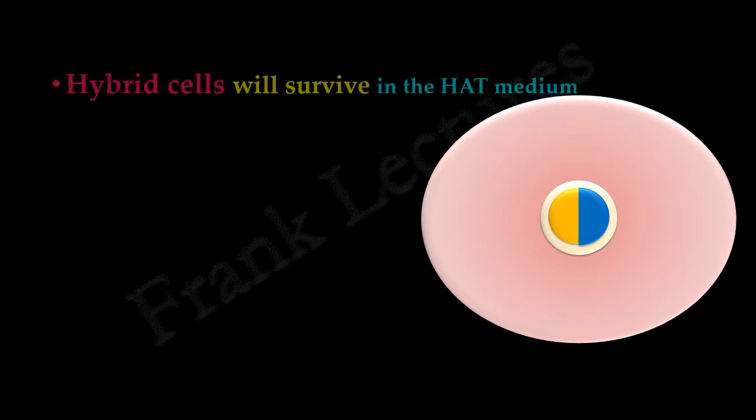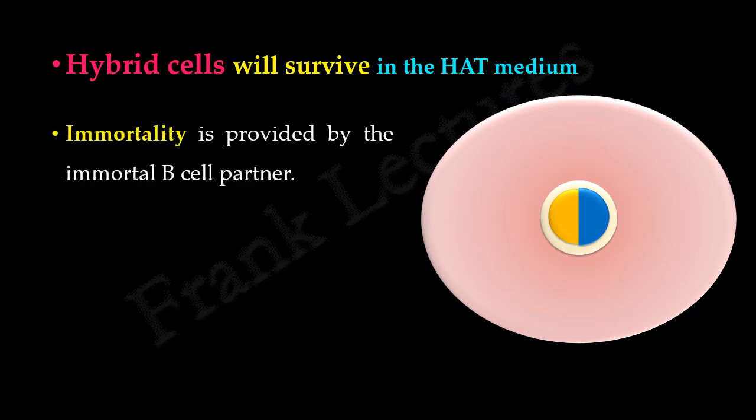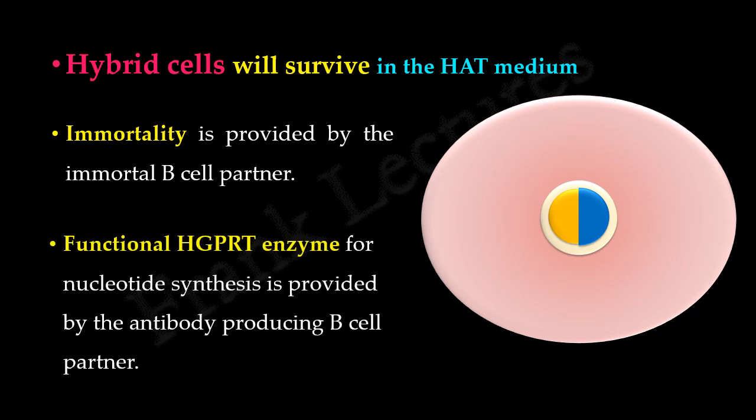What remains are the hybrid cells formed by the fusion of an antibody-producing B cell and an immortal B cell. These hybrid cells will survive in the HAT medium because they are able to divide indefinitely — a property provided by the immortal B cell partner — and functional HGPRT enzyme for nucleotide synthesis is provided by the antibody-producing B cell partner. So these cells will be able to synthesize nucleotides by the salvage pathway.